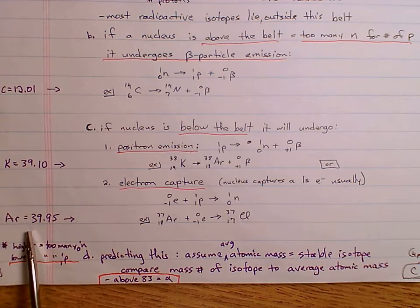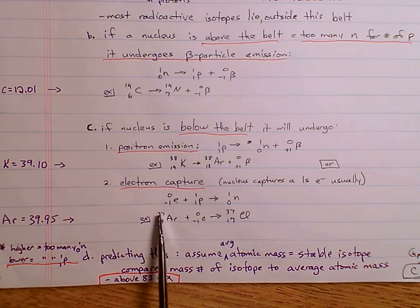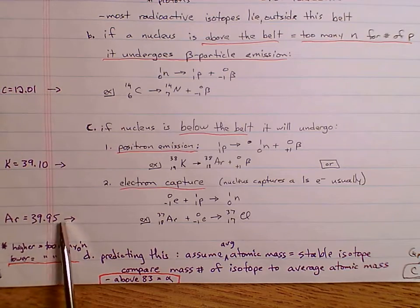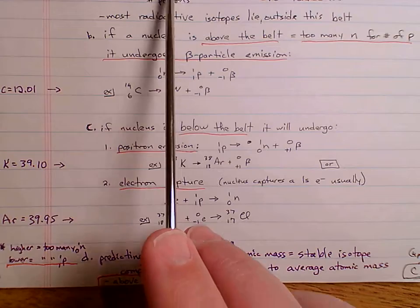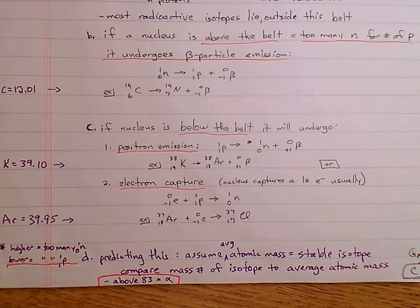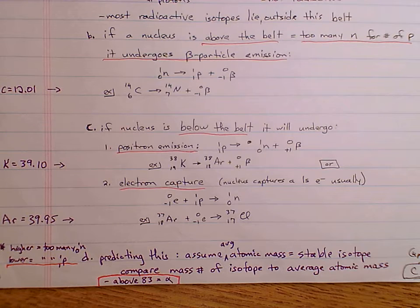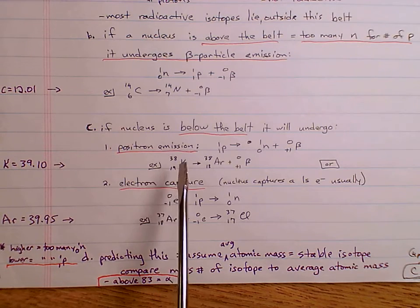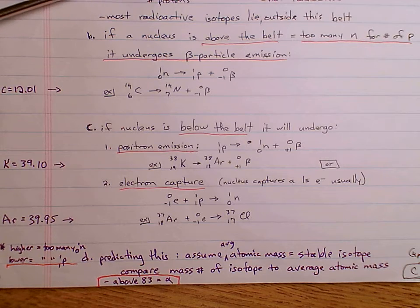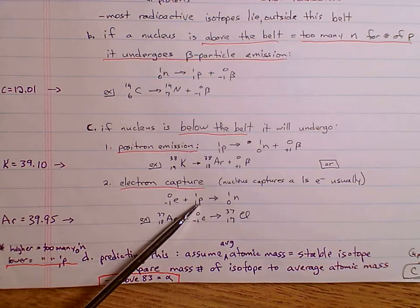Same with argon — the average atomic mass of argon is 39.95, so argon-37 is below the mass of stable argon. We expect stable argon to be around 39-40, so argon-37 is below the belt of stability, meaning it will undergo either positron emission or electron capture. It's really difficult to tell which one it will be. Nuclear physicists who study this have more of a feel for it. For our purposes, you just need to know that if it's below the belt of stability, it will undergo positron emission or electron capture because it needs to change a proton into a neutron.